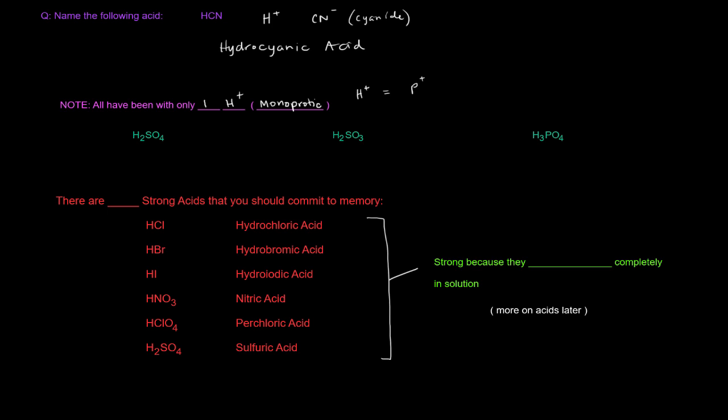There are some acids that have more than just one H plus. So in the case here, H2SO4, we've got two H pluses. This is considered diprotic. Here again, two H pluses, diprotic. And here, three H pluses, that is a triprotic.